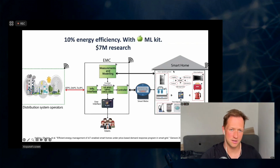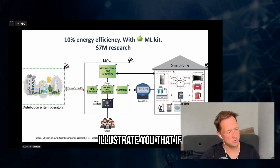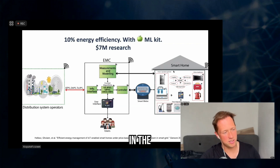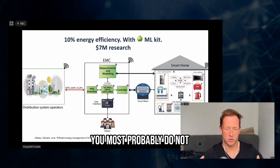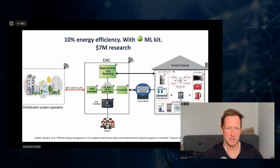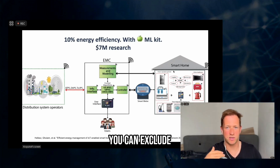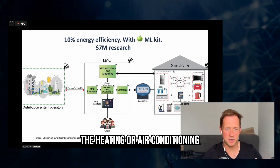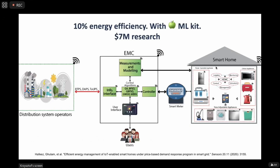What are the devices at home? To illustrate: if you eat only in one area of your house, you most probably do not eat at night, and you sleep in some other area. So you can exclude the heating or air conditioning of some areas of your house.